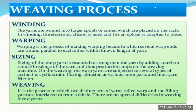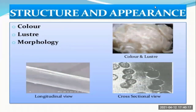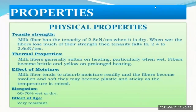Then weaving: it is the process in which two distinct sets of yarns called warp and filling yarns are interlaced to form a fabric. There are no special difficulties in weaving blend yarns. The structure and appearance of the milk fiber fabric have better color, luster, and morphology. The physical properties of milk fiber fabric include tensile strength, thermal properties, effect of moisture, elongation, and effect of age.